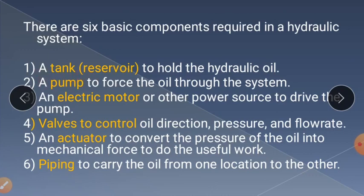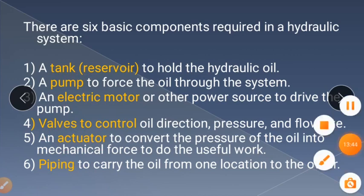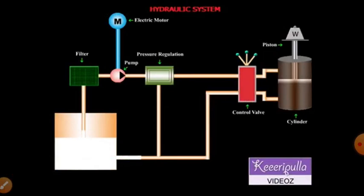The lever operation of the direction control valve has three positions: off, forward, and return. With respect to that, lifting or lowering of the piston in the actuator is achieved. There are six basic components of a hydraulic system: a tank to hold hydraulic oil, a pump to force oil through the system, an electric motor to drive the pump, valves to control oil direction, pressure and flow rate, an actuator to convert pressure into mechanical force, and piping to carry oil between locations.